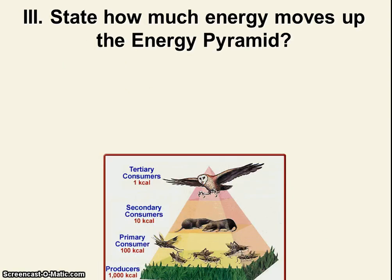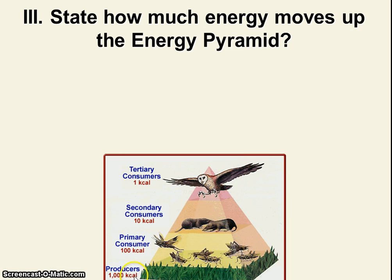When we talk about these, we're actually talking about visual pyramids that scientists use to discuss how the environment is going and how the organisms are interacting. The first pyramid we'll look at is the energy pyramid. In our next Roman numeral, we'll write: state how much energy moves up the energy pyramid. Our energy here is in kilocalories — like the calories you would see on a nutrition label. The first level, our producers — grass — has 1,000 kilocalories.